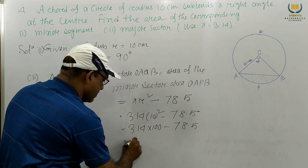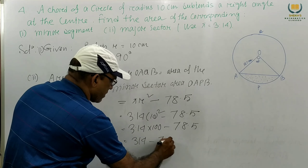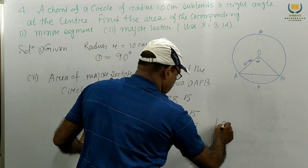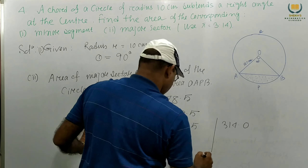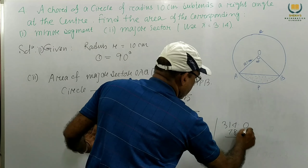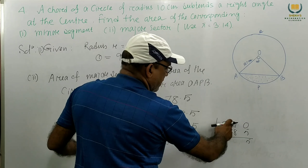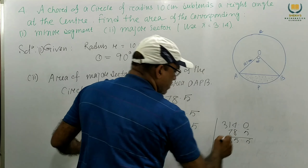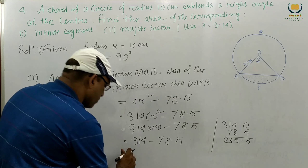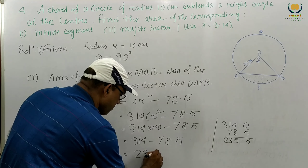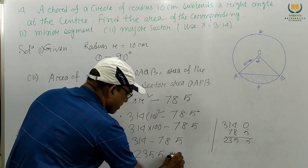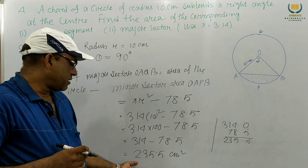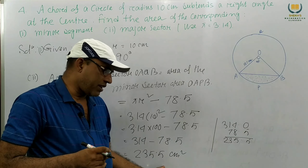Multiplying, we get 314 minus 78.5. Subtracting: 314.0 minus 78.5 equals 235.5. So the area of major sector OAQB equals 235.5 centimeters square.